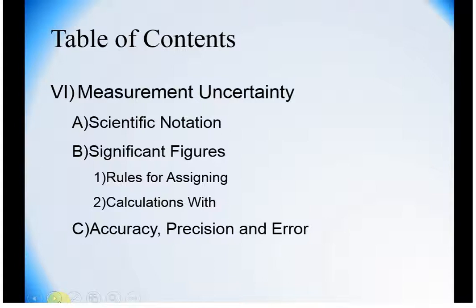When we're talking about measurement uncertainty, one way to eliminate that is to use scientific notation, because it allows us to use the correct number of sig figs. When we talk about sig figs, we have specific rules that are going to help us assign those. You really work through those the first week of lab. We also talk about how to do calculations with significant figures, and then we're going to define accuracy, precision, and error.